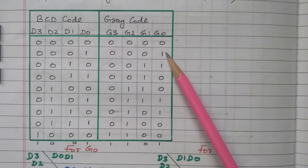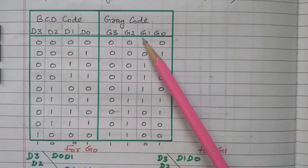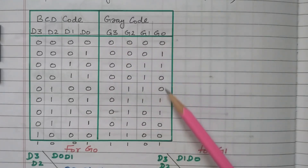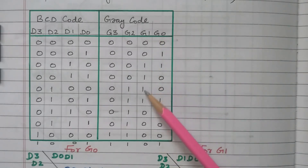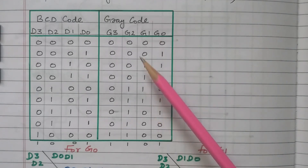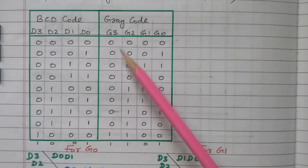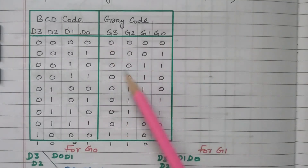By using the Karnaugh map, we need to identify the minimized Boolean expression for G0, G1, G2, and G3. G0 has 5 ones, G1 has 4 ones, G2 has 6 ones, and G3 has 2 ones. We need to plot the Karnaugh map for these 4 output digits and find the minimized Boolean expression. Now we will go to the K-map for a simplified Boolean function.